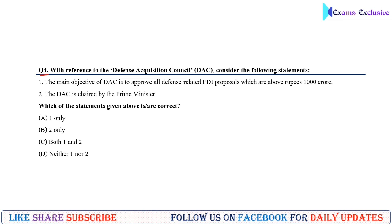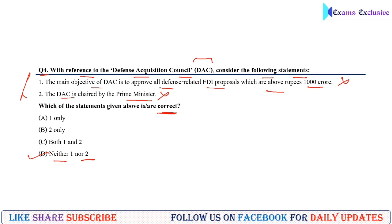Question number four: With reference to the Defense Acquisition Council (DAC), consider the following statements. First, the main objective of DAC is to approve all defense-related FDI proposals above rupees 1000 crore — this is wrong. Second, the DAC is chaired by the Prime Minister — this is also wrong; it is chaired by the Defense Minister, not the Prime Minister. So the correct answer is neither one nor two, making option D correct.